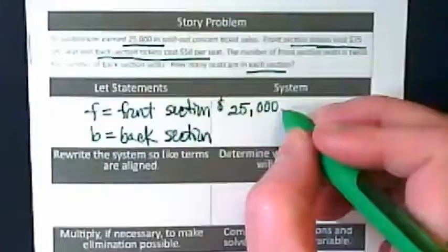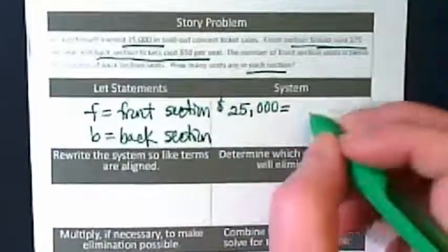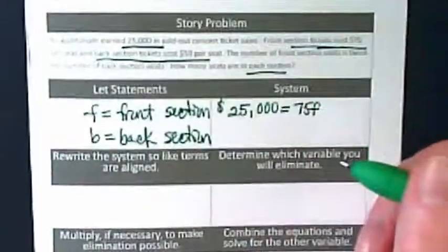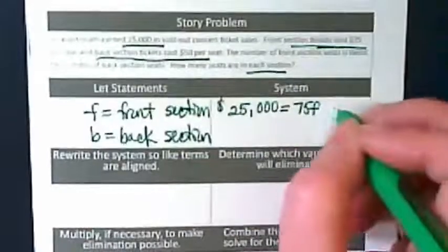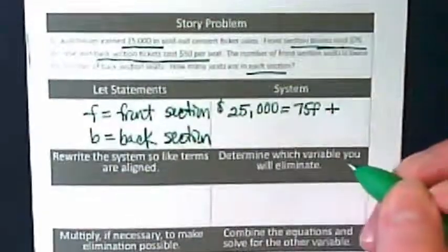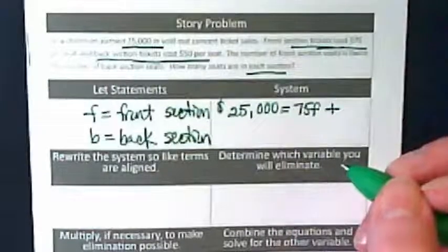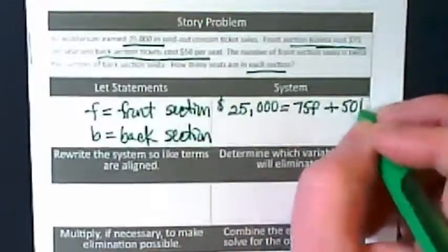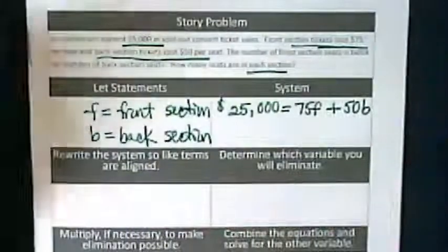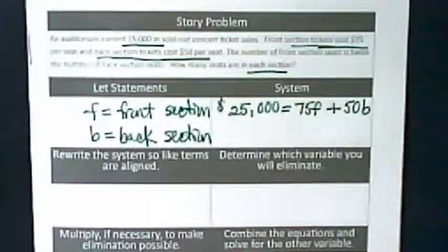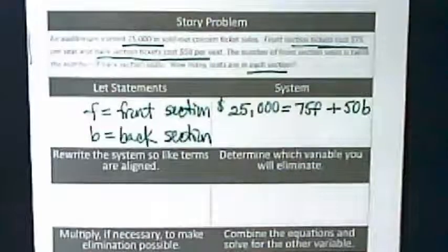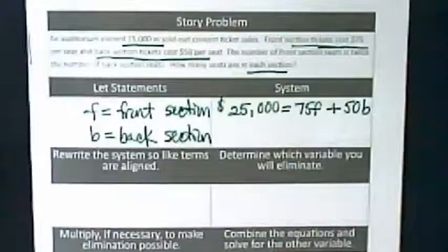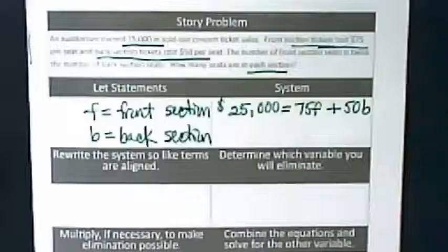So our first equation is going to be about the money. $25,000 equals the cost of a seat in the front section times f, because we don't know how many seats those were, plus what do you think should go next? Yep, 50 times b, because back section seats cost $50. So this whole first equation is about the money. We know the total cost is $25,000. We know each seat costs $75 or $50, depending on where it is.